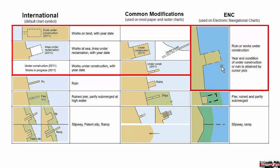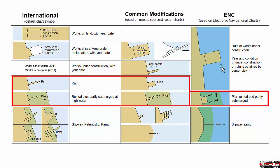Ruins are dangerous to all vessels, and the submerged section of a ruined pier or obstruction will show as dashed lines. Note the symbol may be accompanied by the abbreviation RU, which means ruins.